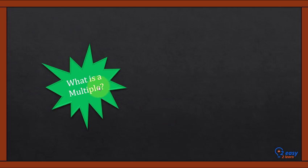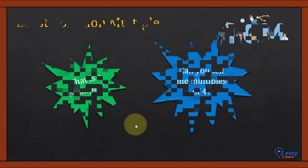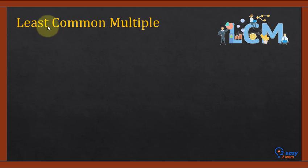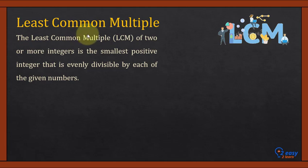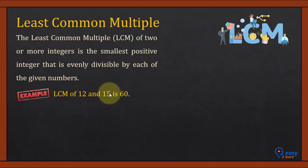What is a multiple? Can you tell me the multiples of four? If you know the answers, write in the comment box. The least common multiple of two or more integers is the smallest positive integer that is evenly divisible by each of the given numbers. For example, the LCM of 12 and 15 is 60, which means that 60 is exactly divided by both 12 and 15.